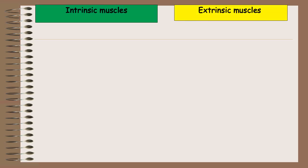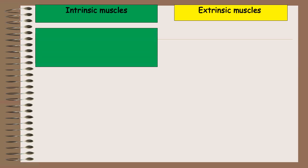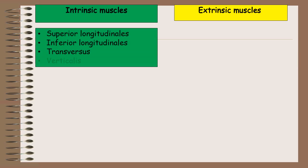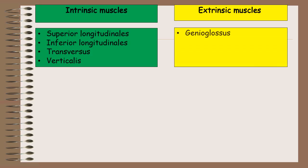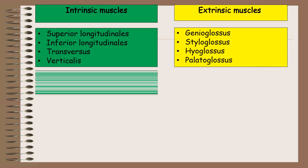The intrinsic muscles of the tongue are superior longitudinal, inferior longitudinal, transversus, and verticalis. The extrinsic muscles of the tongue are genioglossus, styloglossus, hyoglossus, and palatoglossus.